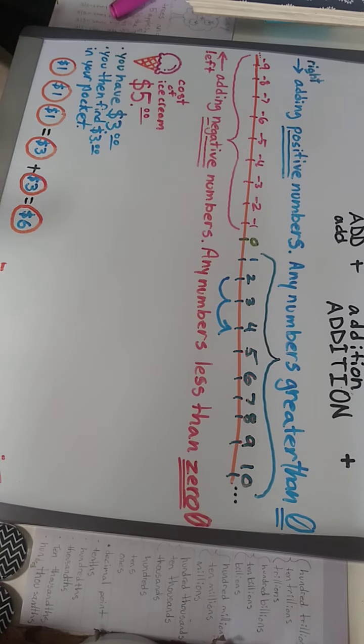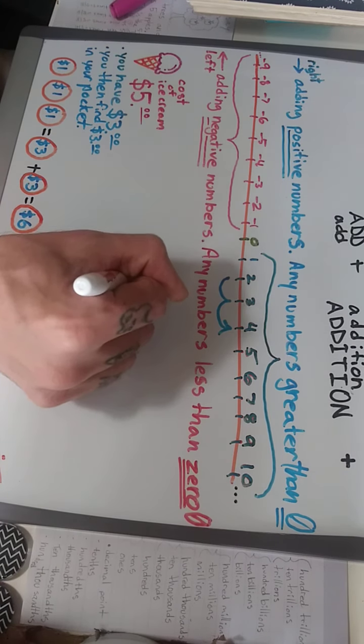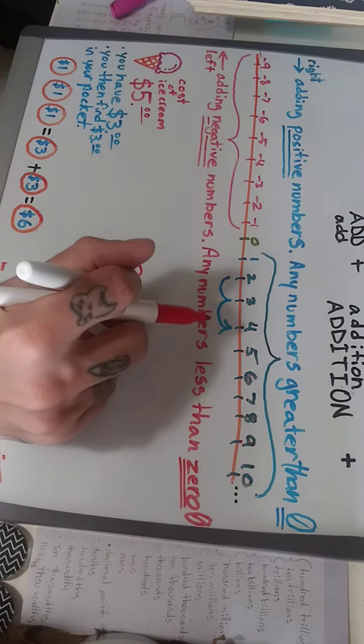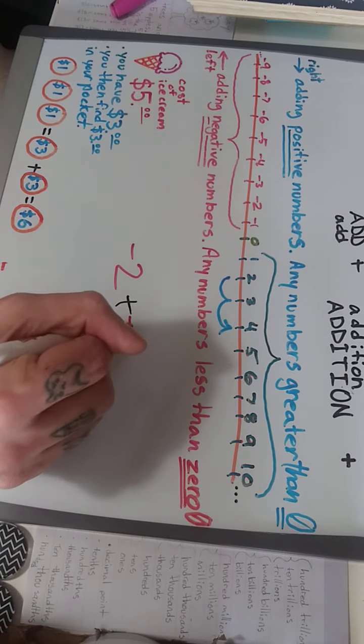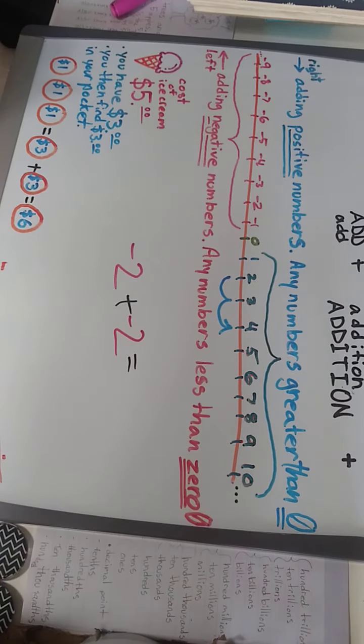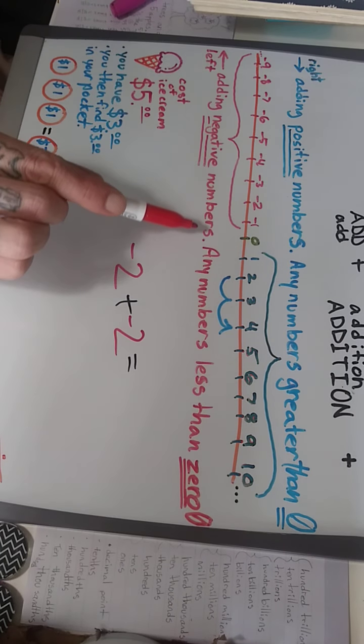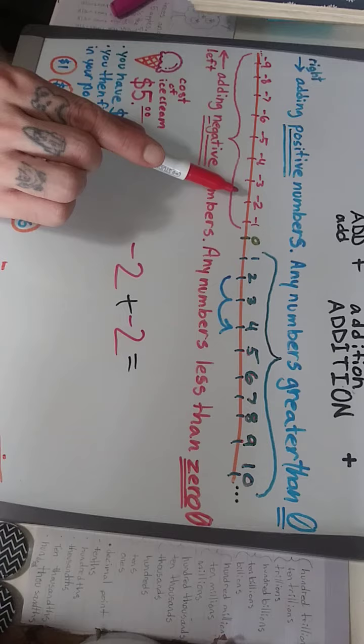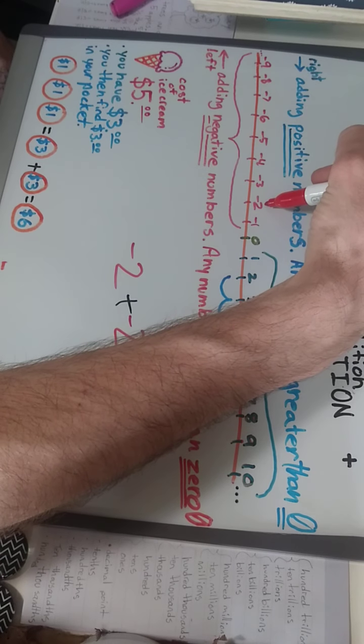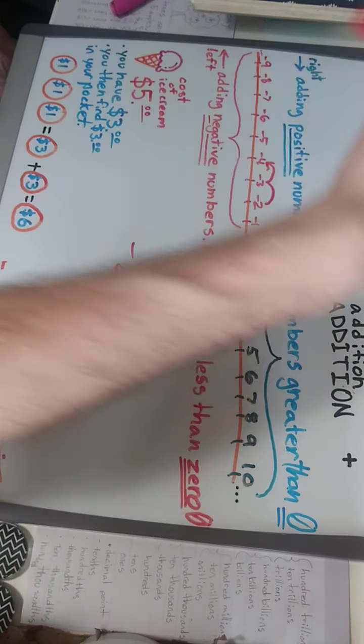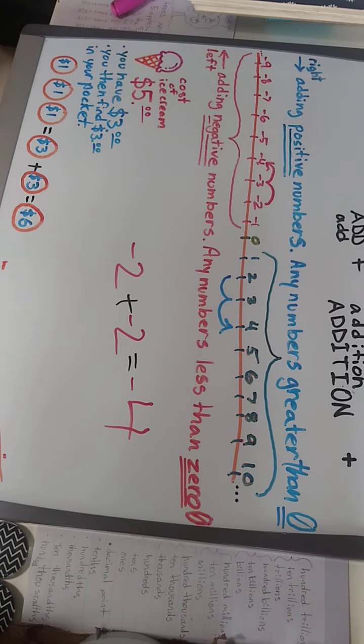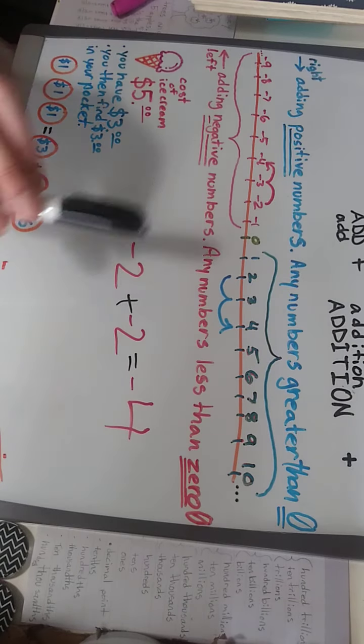Now adding negative numbers, let's say negative two. So adding negative numbers, we would move to the left. Negative two, and we're adding another negative two. We would start at negative two, move one, two to the left, giving us negative four. So adding negative numbers, you move to the left.